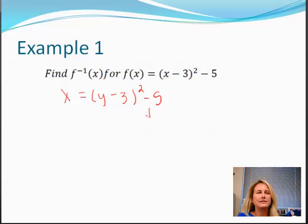The first thing we're going to do is add this 5 to the other side. So we have x plus 5 is equal to y minus 3 squared.